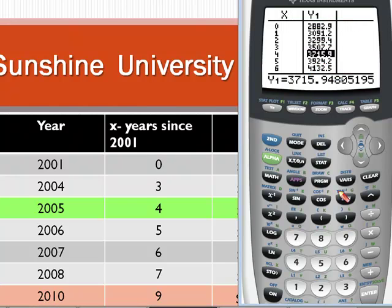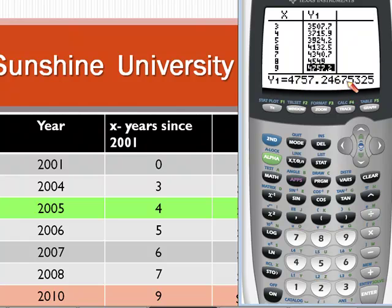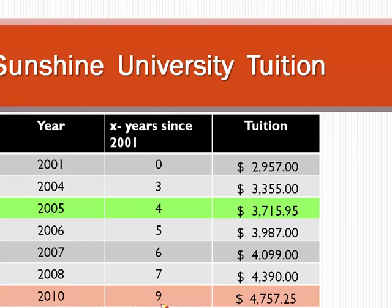Now let's scroll down to X equals 9, which corresponds to 2010 — nine years past 2001. Notice if you look at the Y column, you're only going to see it goes to the nearest tenth. So if you actually highlight the column, then you get all of the decimal places. We're going to round to the nearest hundredth, so we'll call this $4,757.25 — which again corresponds to what we found.